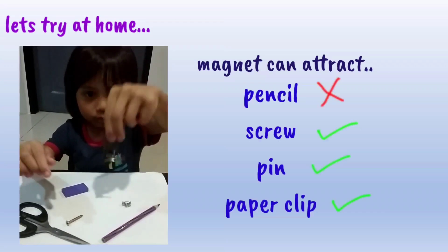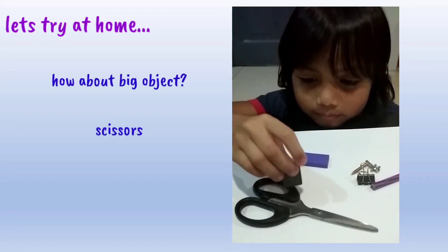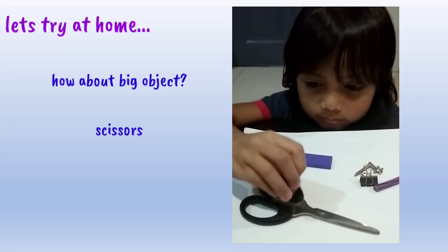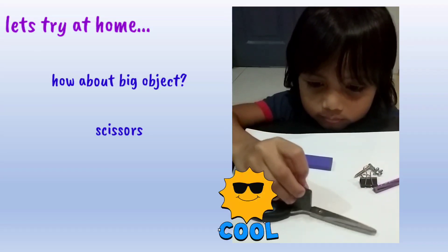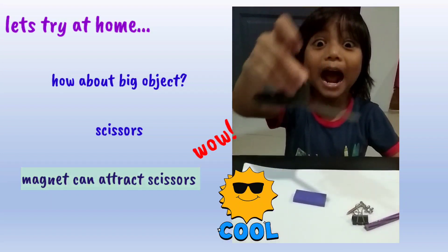Magnets can attract screws, pins and paperclips. How about big objects like scissors? Yes, magnets can attract scissors.